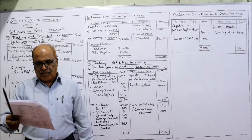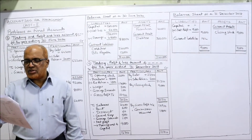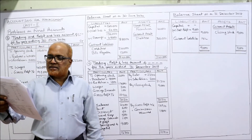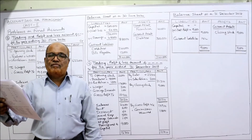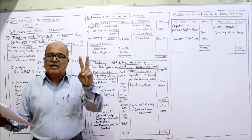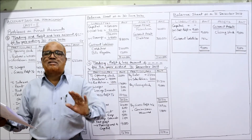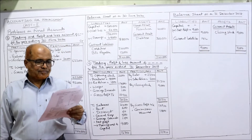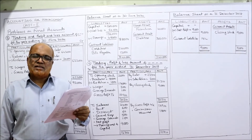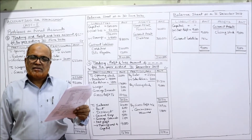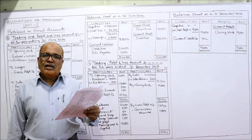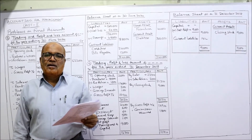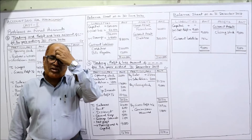Problem number six: from the following ledger balances, prepare trading, profit and loss account for the year ended 31st December 2018. A trial balance is given with debit and credit items. Below the trial balance, closing stock is given. This closing stock will appear twice — trading account credit side and balance sheet asset side. First item: opening stock — trading debit. Purchases — trading debit. Sales — trading credit. Wages — trading debit. Carriage inward — trading account debit side.